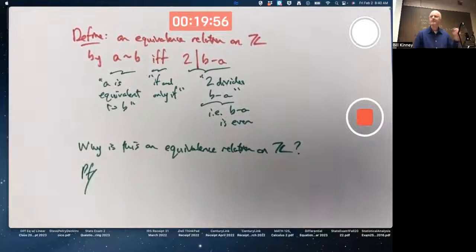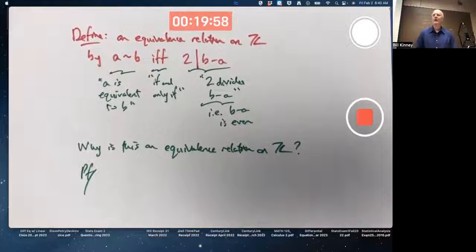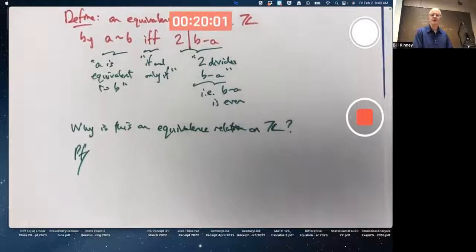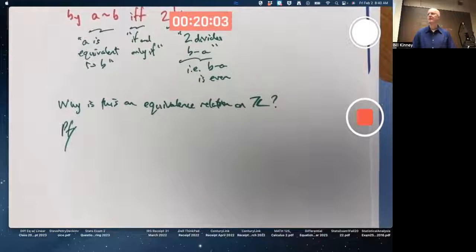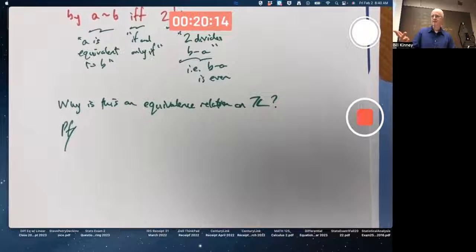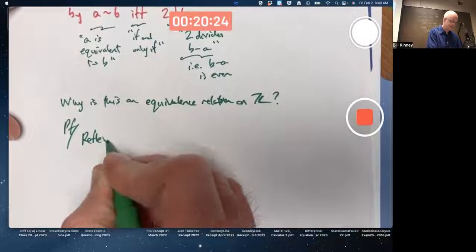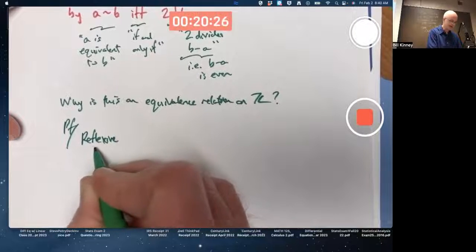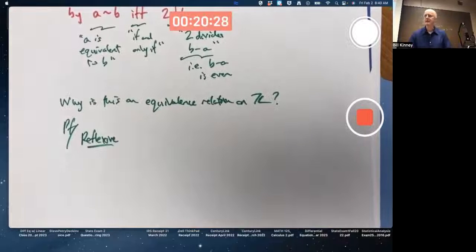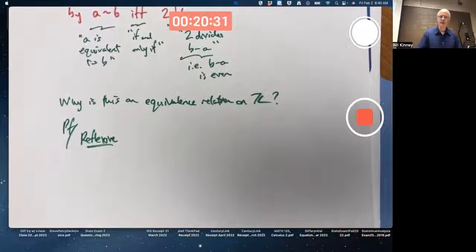When you prove something's an equivalence relation, there's three things you have to do. Three properties you have to show. They're called reflexive, symmetric, and transitive. And it's nice to put them in alphabetic order. Reflexive, symmetric, transitive. R, S, T. They're even right next to each other in the alphabet. I'm going to go ahead and take the liberty of not writing sentences here for the sake of speed.